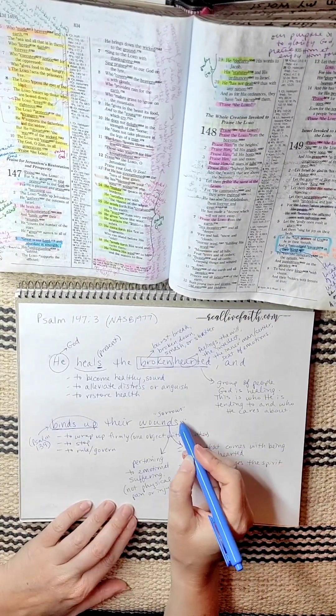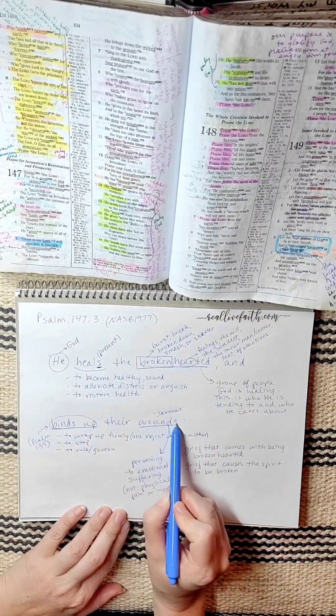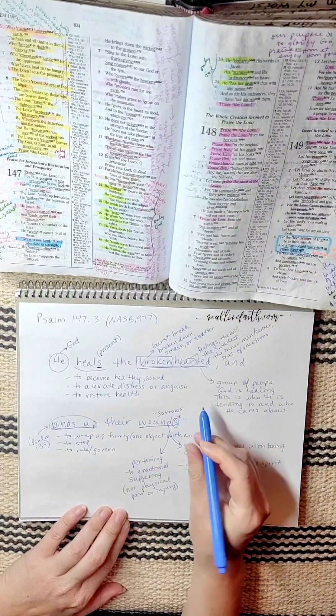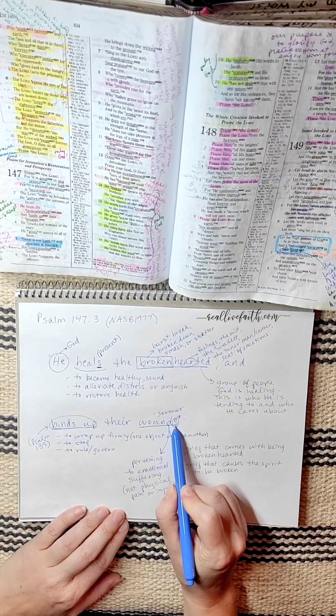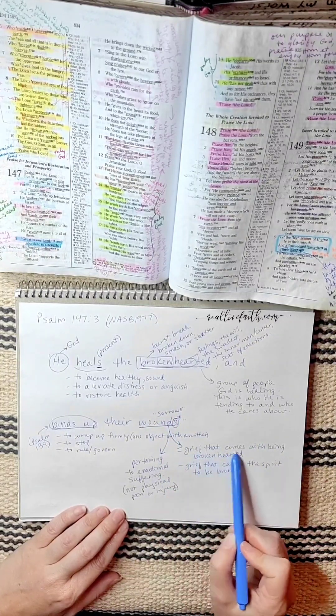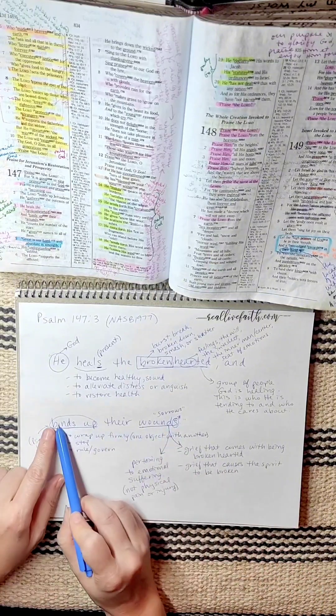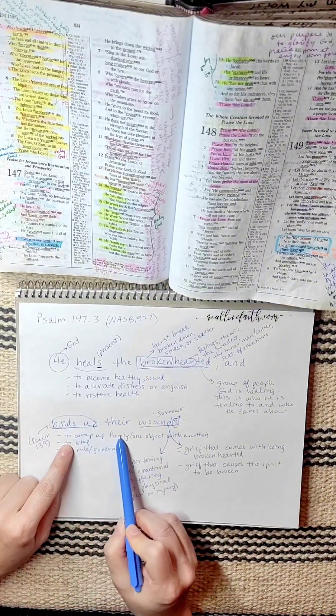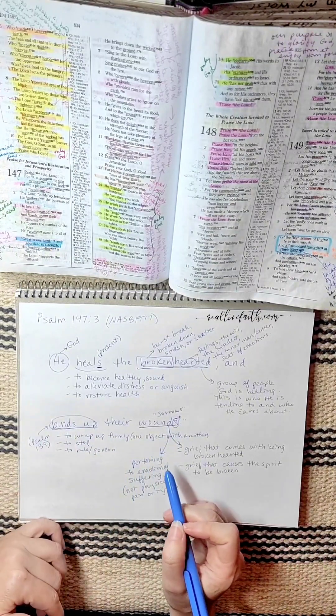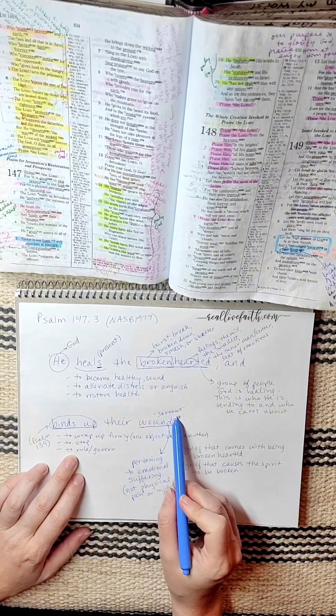And notice again, just like this says heals, it's a plural word. This also, wounds, is plural. It has an S on the end. So that's important because it's more than one. We have many sorrows in our life. We have many griefs that come with being brokenhearted. And every single one of them, God is binding up. He is wrapping up firmly, one object with another, wrapping his arms around us, stopping those sorrows, ruling over them and governing them.